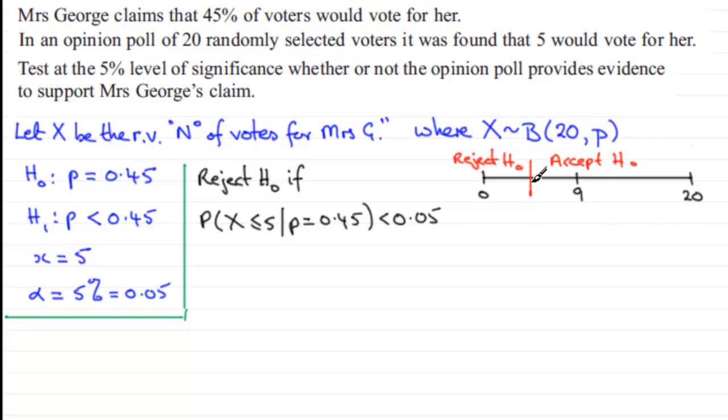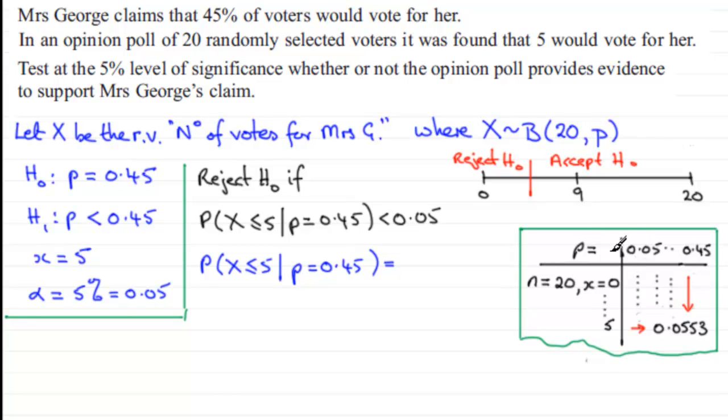Let's work out that probability. The probability that X is less than or equal to 5, given that p equals 0.45. It's very easy to get this result by looking in the cumulative distribution tables for a binomial distribution.